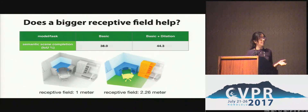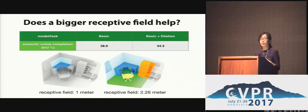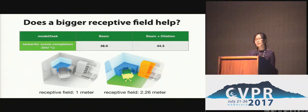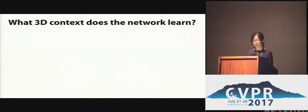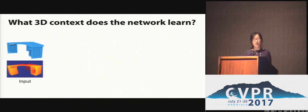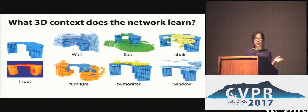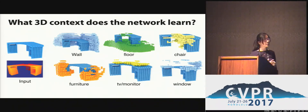The second question is: does bigger receptive field matter? We compare networks with the same number of parameters but without dilated convolution, which reduces the receptive field from 2 meters to 1 meter. Even with a 1-meter receptive field, the amount of context information captured is quite limited. The bigger receptive field allows the network to capture richer context information and improves performance. To see what context the network learns, we feed it a single depth image of a desk, perform scene completion, and visualize top responses for different object categories — walls, floors, chairs, and others. The network is able to hallucinate the locations of unobserved objects based on learned 3D context.